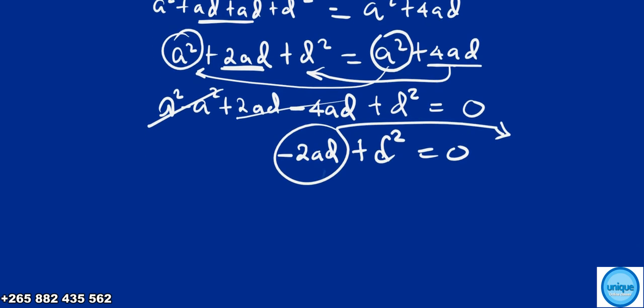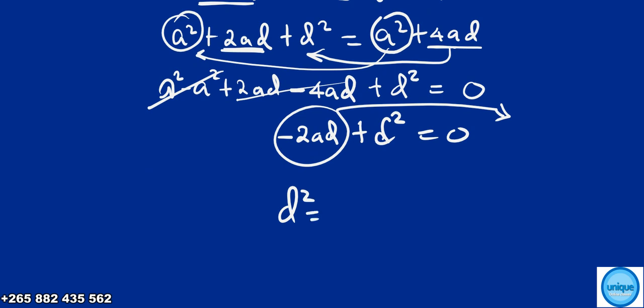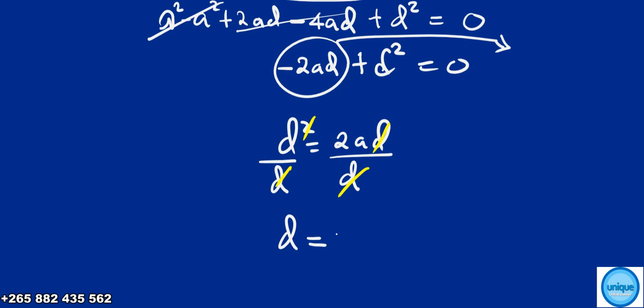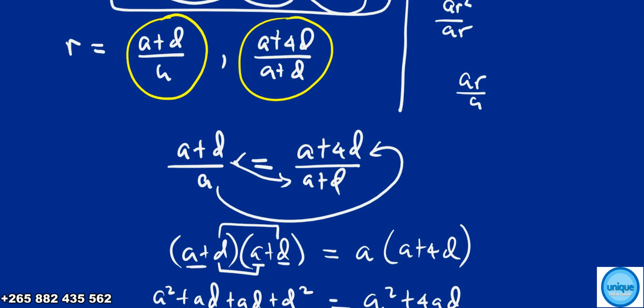So negative 2ad plus d squared equals zero. This gives us d squared equals 2ad. Dividing both sides by d, we get d equals 2a.